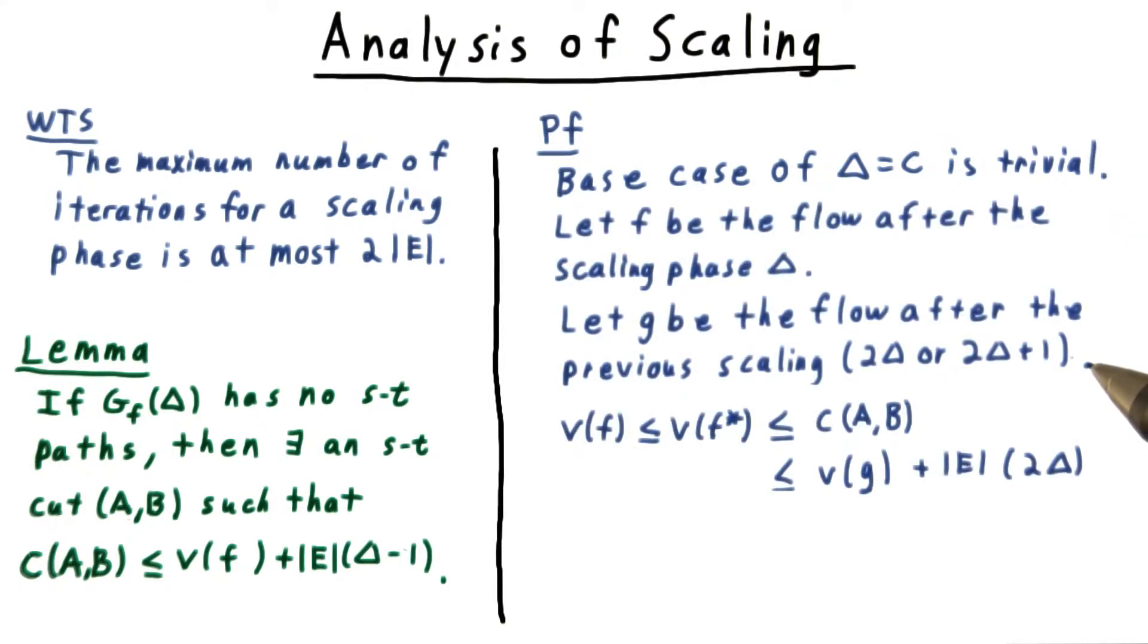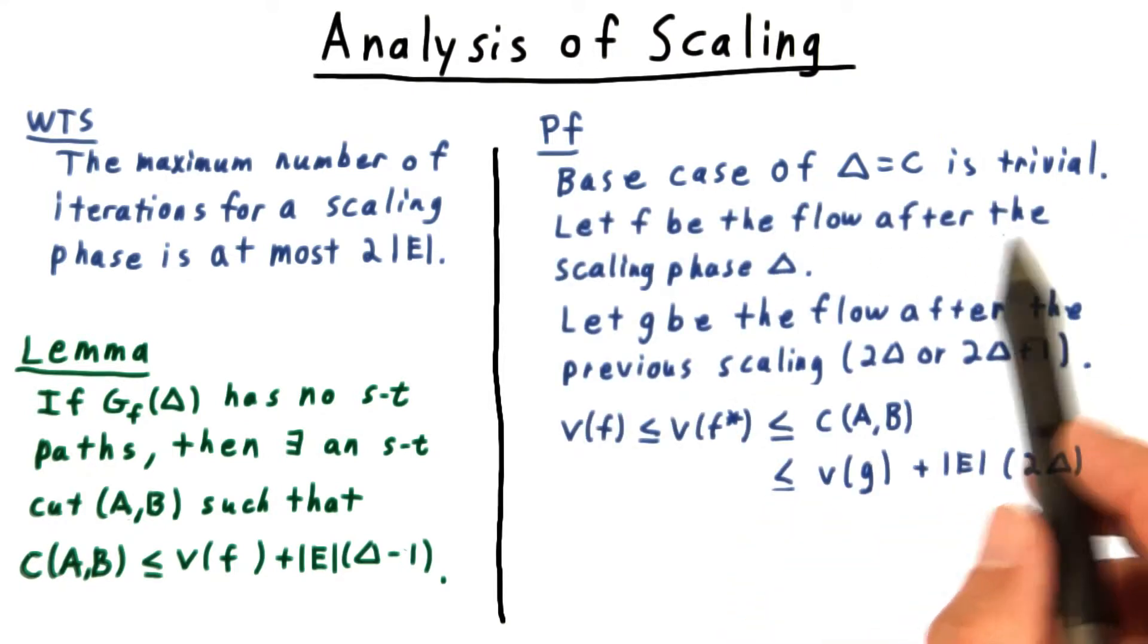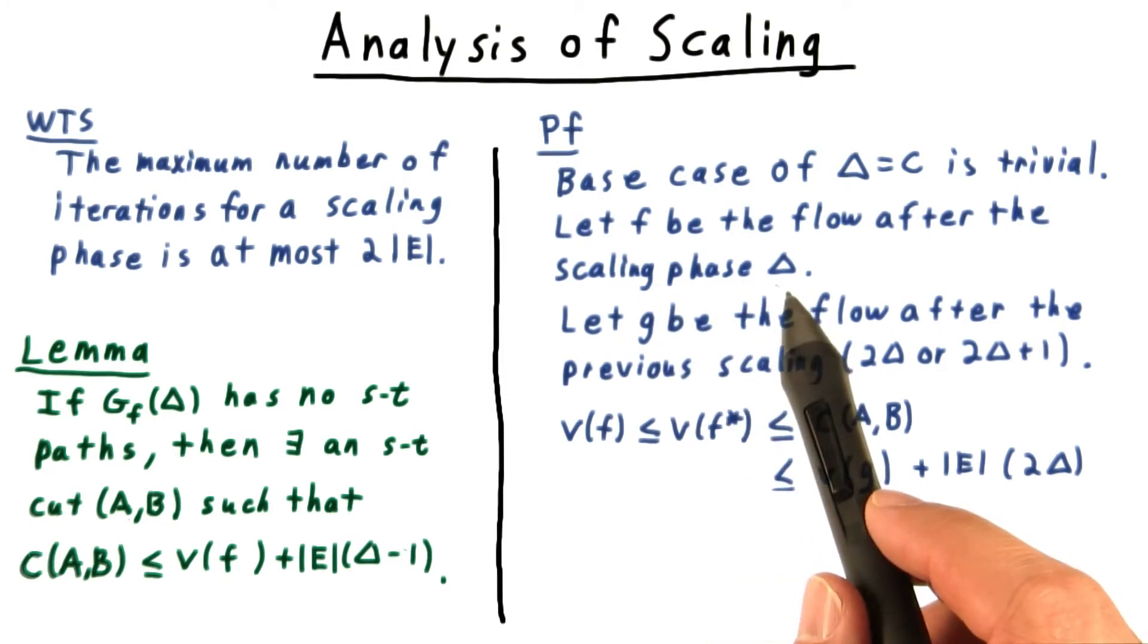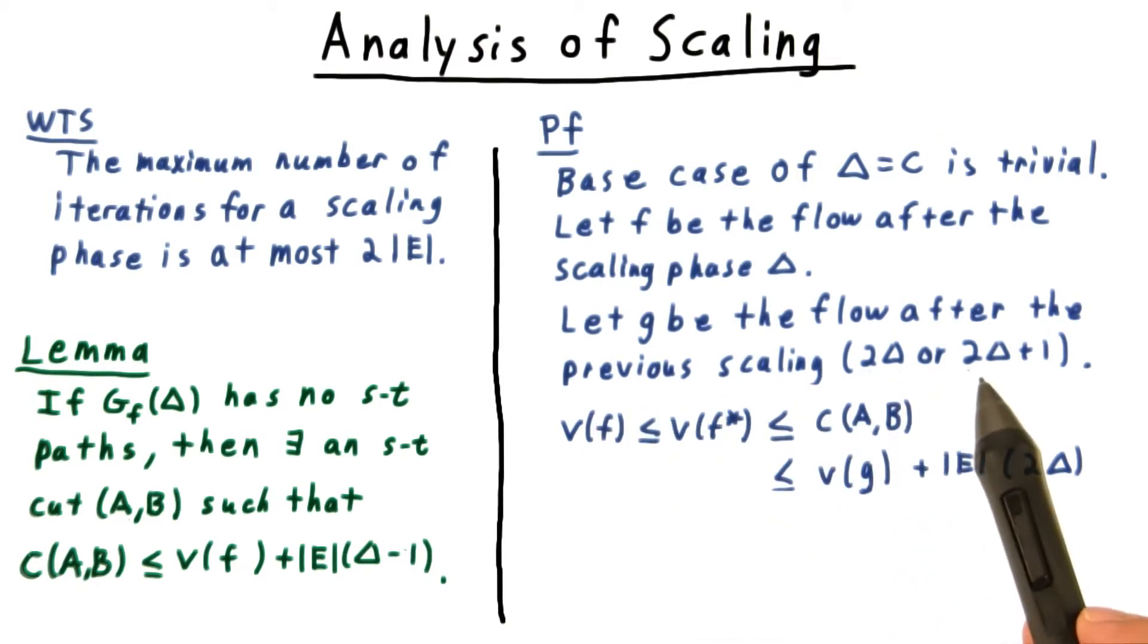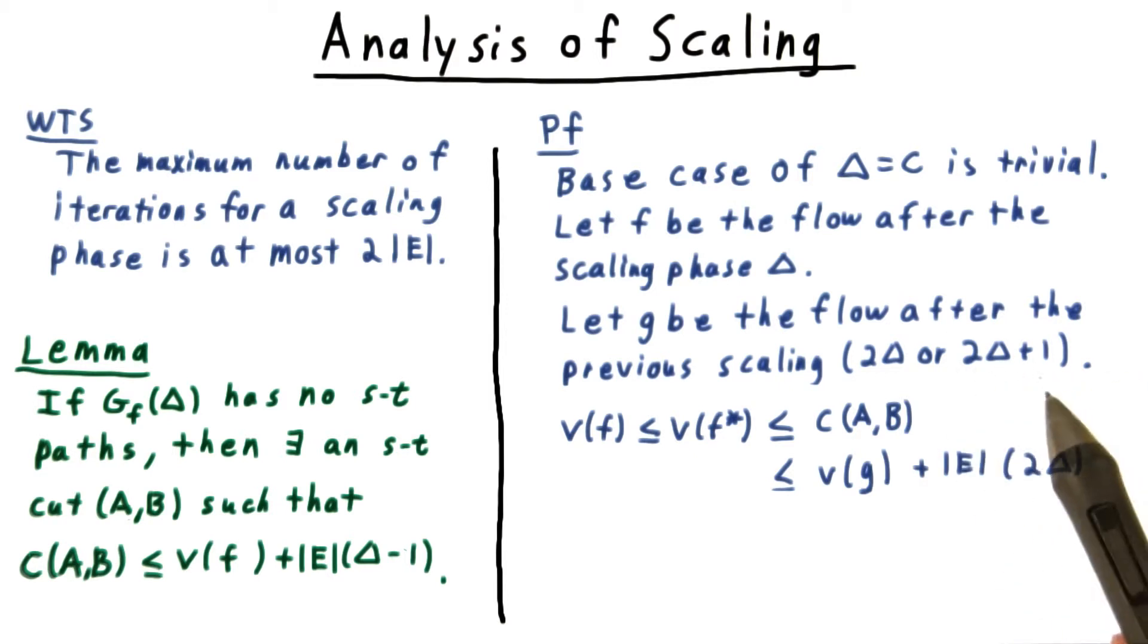For subsequent iterations, we let f be the flow after the scaling phase delta, and we'll let g be the flow before. That is the flow after the previous scaling, which would be either 2 delta or 2 delta plus 1, depending on how the integer division rounding worked.